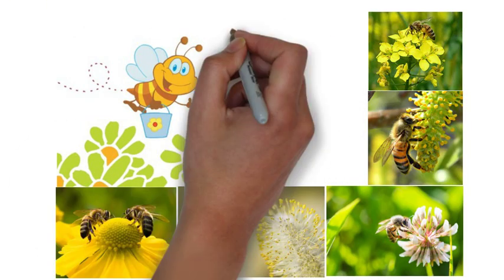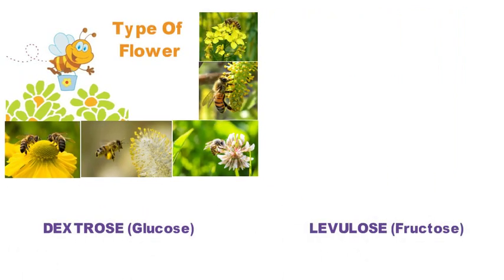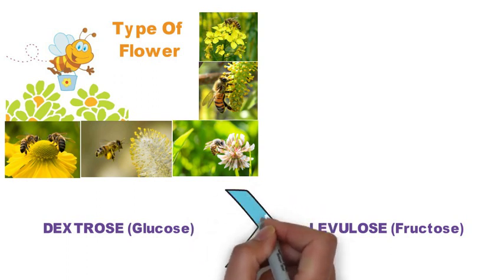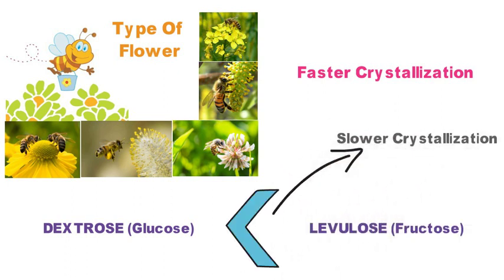The major one is the source of the flower, as each flower has a different ratio of dextrose and levulose in their nectar. If the quantity of dextrose is more, honey is likely to crystallize much faster. If it is less, then the crystallization process may take several months or longer.